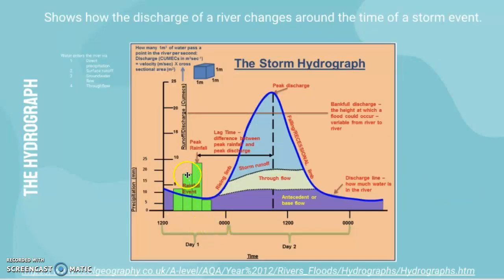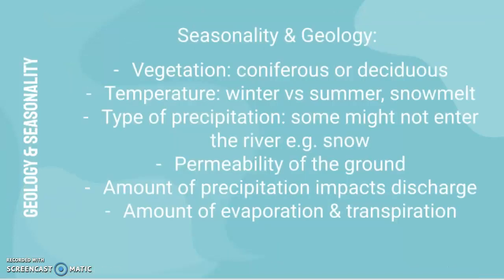Temperature — winter versus summer — impacts snowmelt. More snowmelt means the flooding magnitude is likely larger with a higher peak discharge. It would more likely impact antecedent flow — the flow already in the river — because in summer with snowmelt the river channel will tend to have a larger volume of water already. Climate change can also impact this.